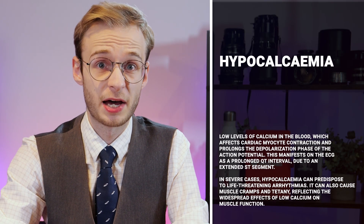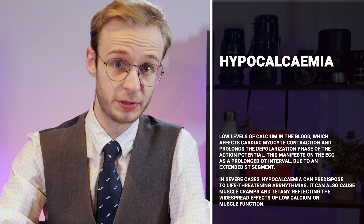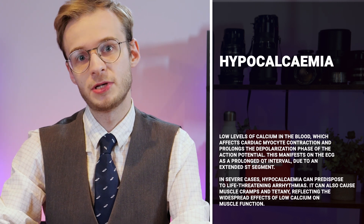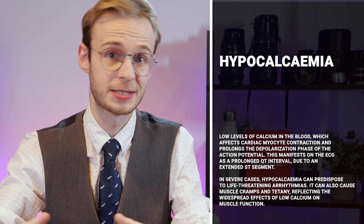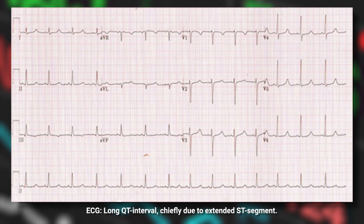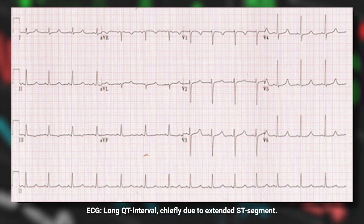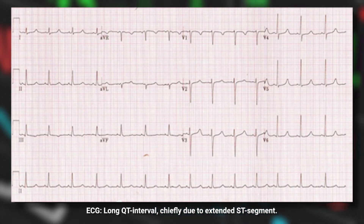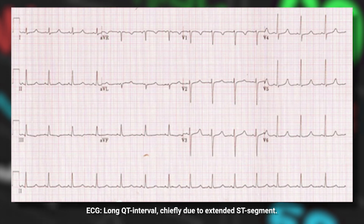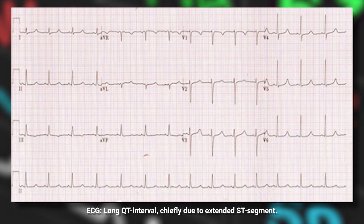Hypocalcaemia — low levels of calcium — means cardiac myocytes are less able to contract and it takes longer, prolonging the depolarisation phase of the action potential. On the ECG, this extends the ST segment and increases the QT interval, giving a so-called long QT. In a question stem you may also see mention of muscle cramps or tetany, reflecting the widespread effects on muscle contraction throughout the body, not just the heart.